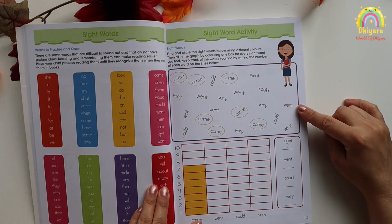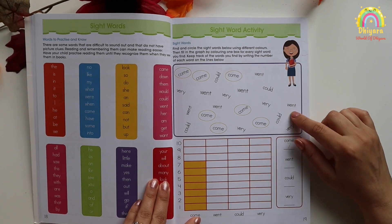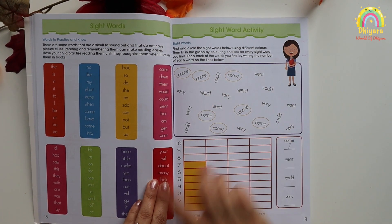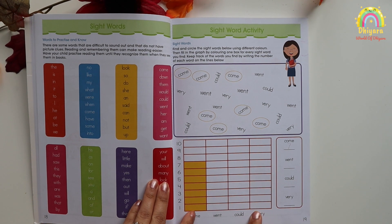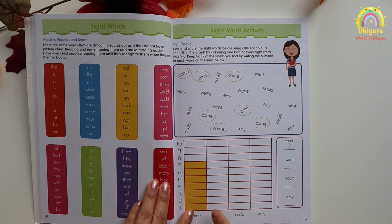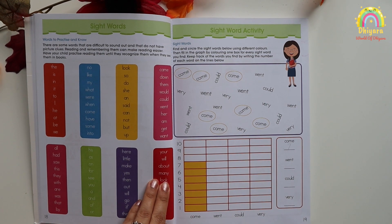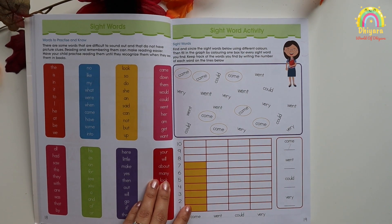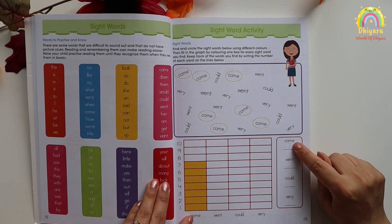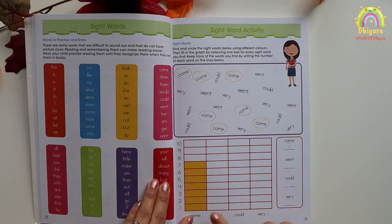The first activity you can see here is a graph activity where sight words are written randomly and there is a graph. What you want to do is count these sight words and tally them in the graph. For example, there is a number 7 — you want to write the number of occurrences and highlight those boxes.